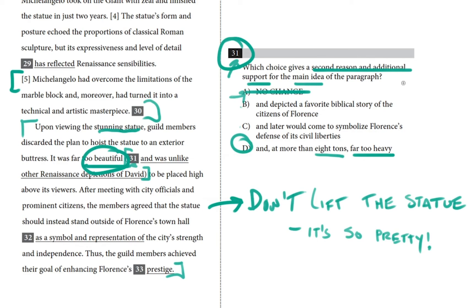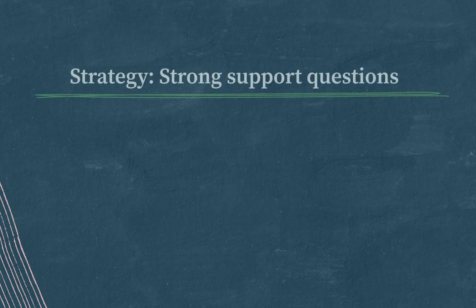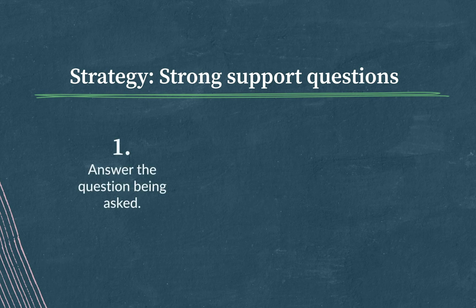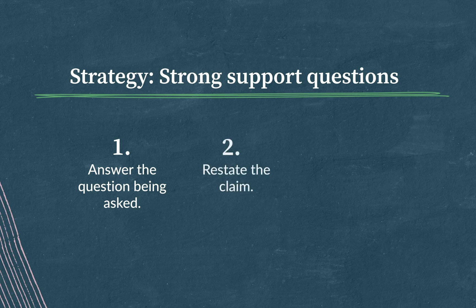Rather than go through the choices one by one, I went to the passage first, read the paragraph, and tried to pull out the main idea. Then I found the first piece of support — it's too beautiful — and looked for a piece of support that would match: it's too beautiful to keep far away, and it's too heavy to lift safely. Let's review some strategies for strong support questions. First, answer the question that's actually being asked — every choice is grammatically correct, so don't fall for a choice that sounds good but doesn't actually answer the question. Then restate the claim: always start by restating in your own words the point that the answer is going to support. Finally, match ideas: get rid of choices that don't match the ideas they're meant to support. Good luck out there — you've got this.